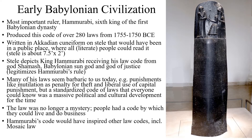Hammurabi's laws were recorded in Akkadian cuneiform on a stele that would be placed in public where all literate people would be able to read it. The stele shown on this slide was about seven and a half feet tall and two feet wide. At the top of the stele, there's an image of king Hammurabi receiving the law code from the god Shamash, the Babylonian god of the sun and of justice. This divine image would have legitimized not only Hammurabi's rule but his law code as well in the eyes of his subjects.